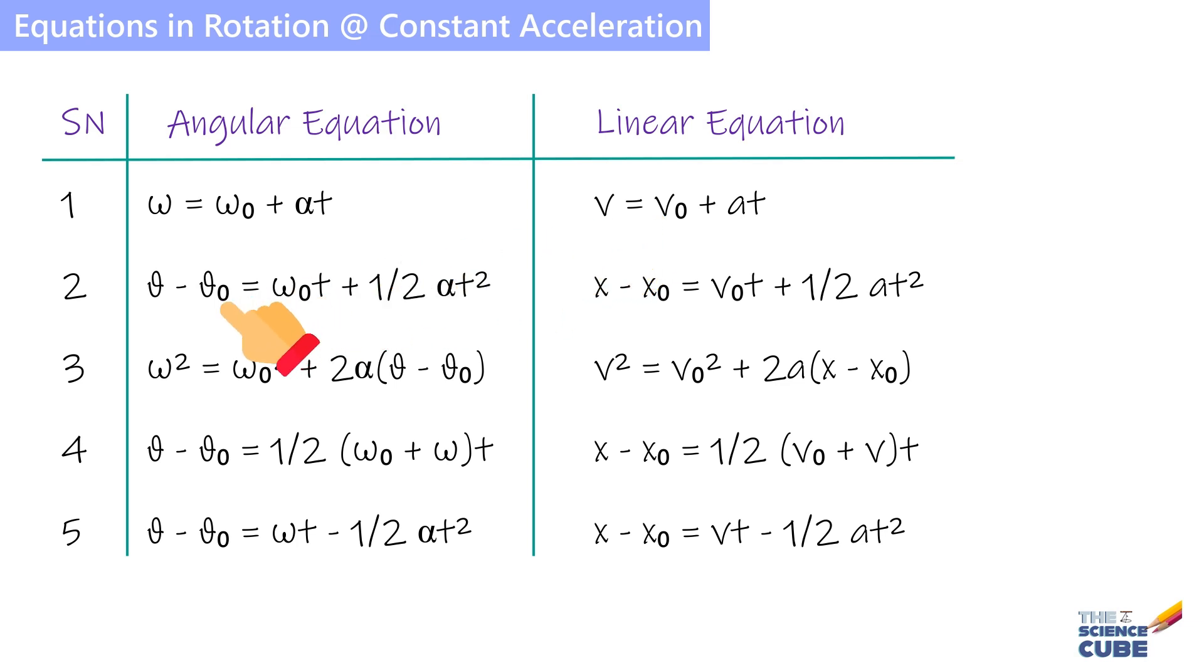Theta 0 is the initial angular position of the body, equivalent to X0 that we consider in linear motion. Finally, alpha is the constant angular acceleration, equivalent to the constant acceleration A in linear motion. When dealing with a problem in rotation, whenever you feel confused, try to draw an analogy with the variables in linear motion. That will bring a lot of clarity.